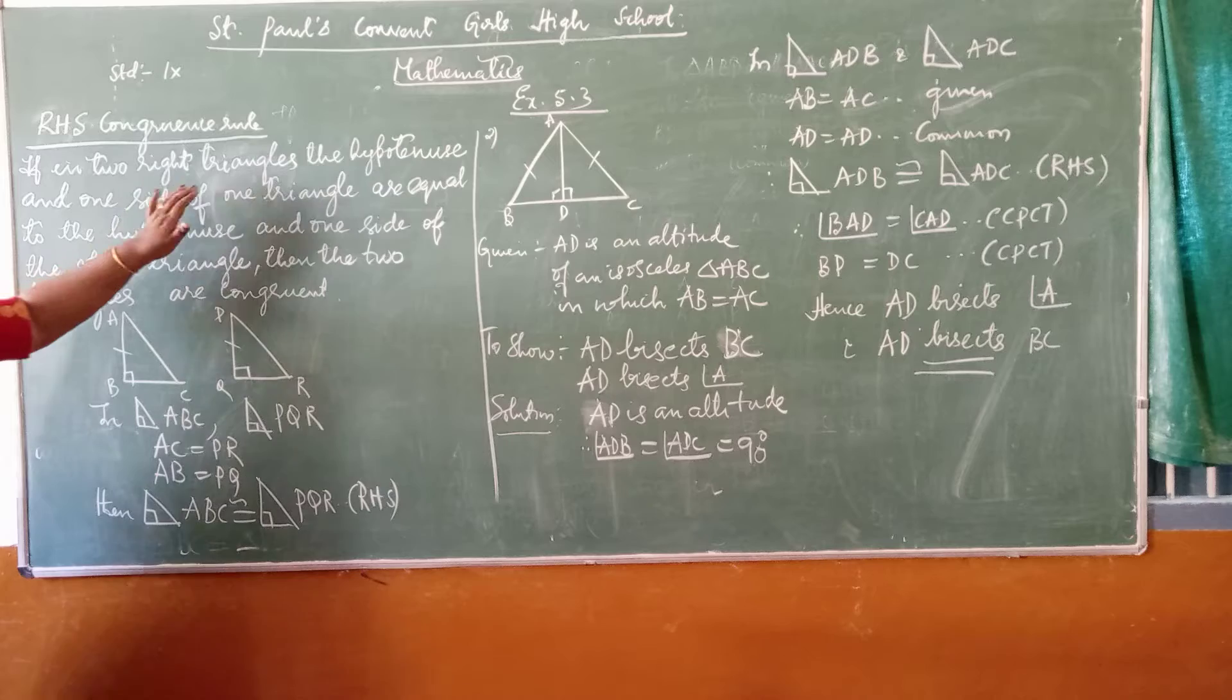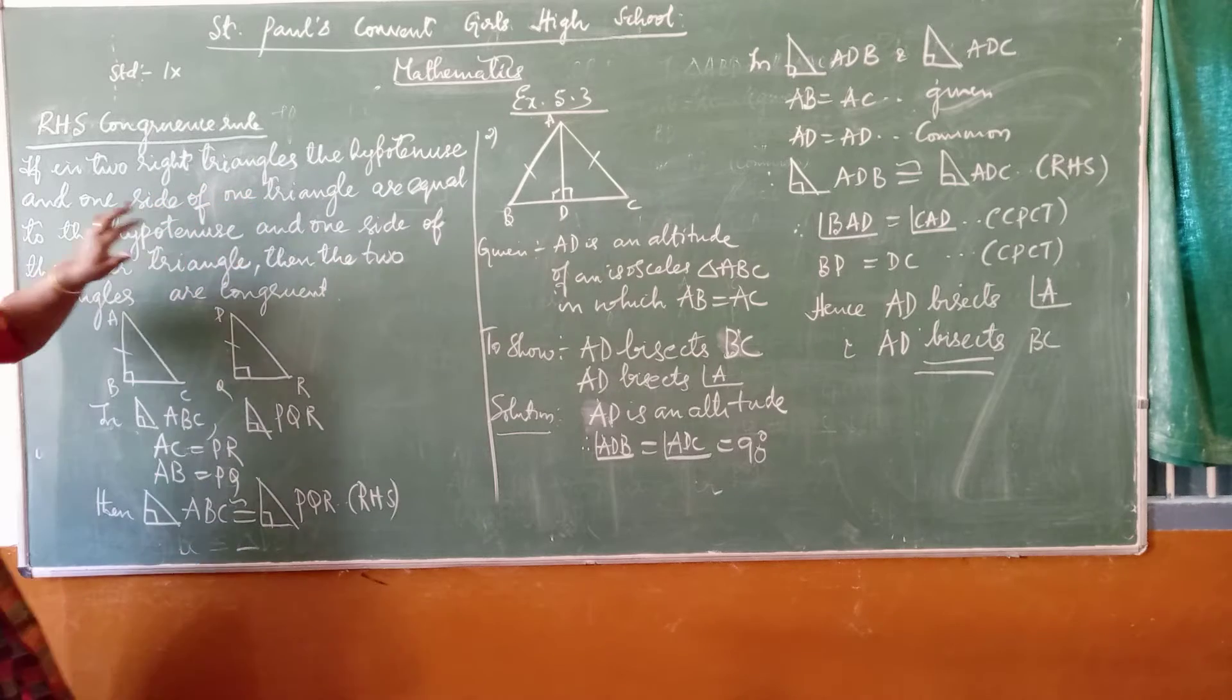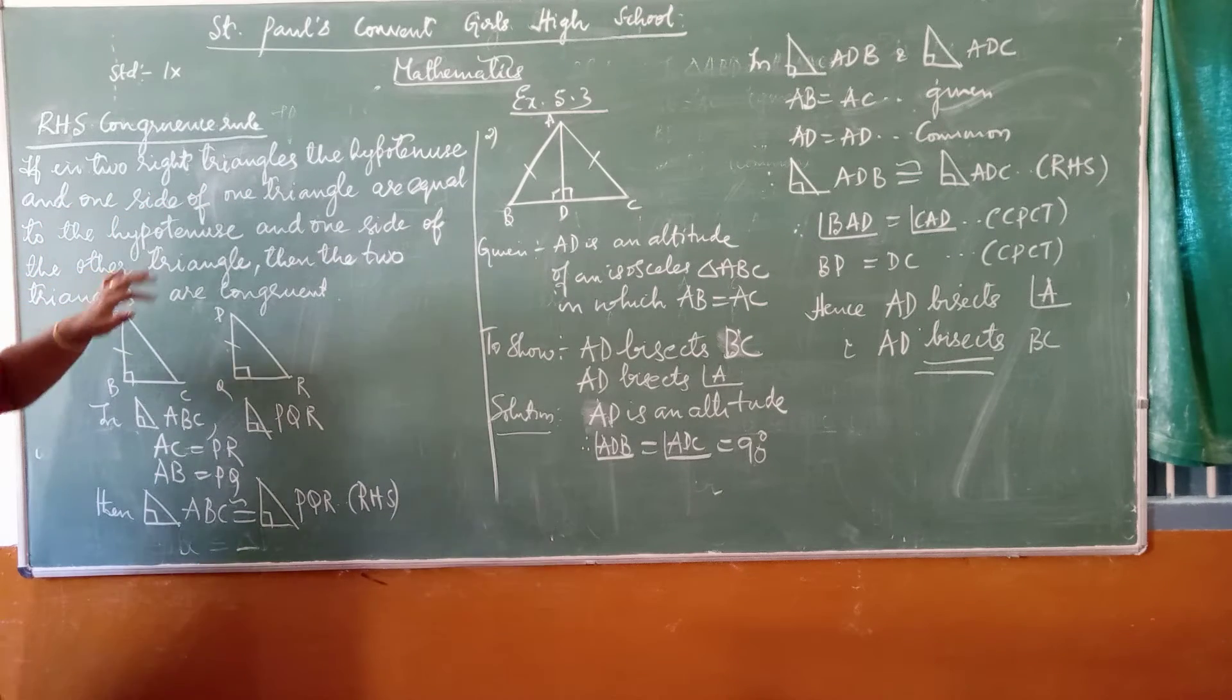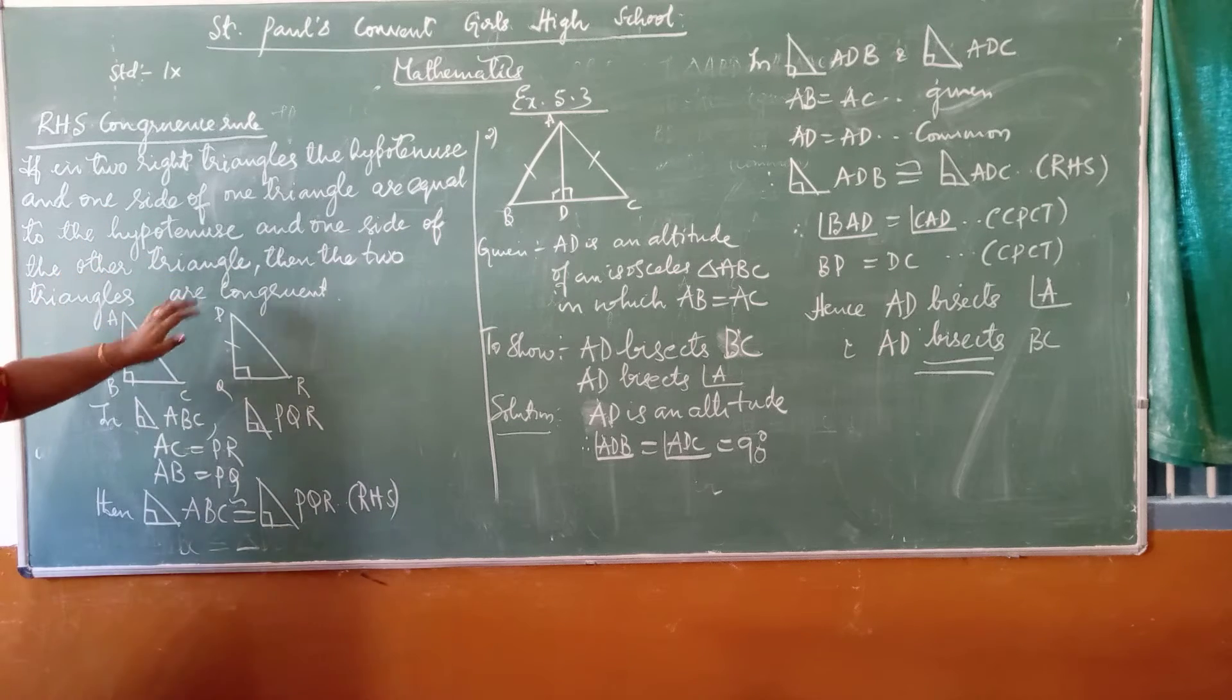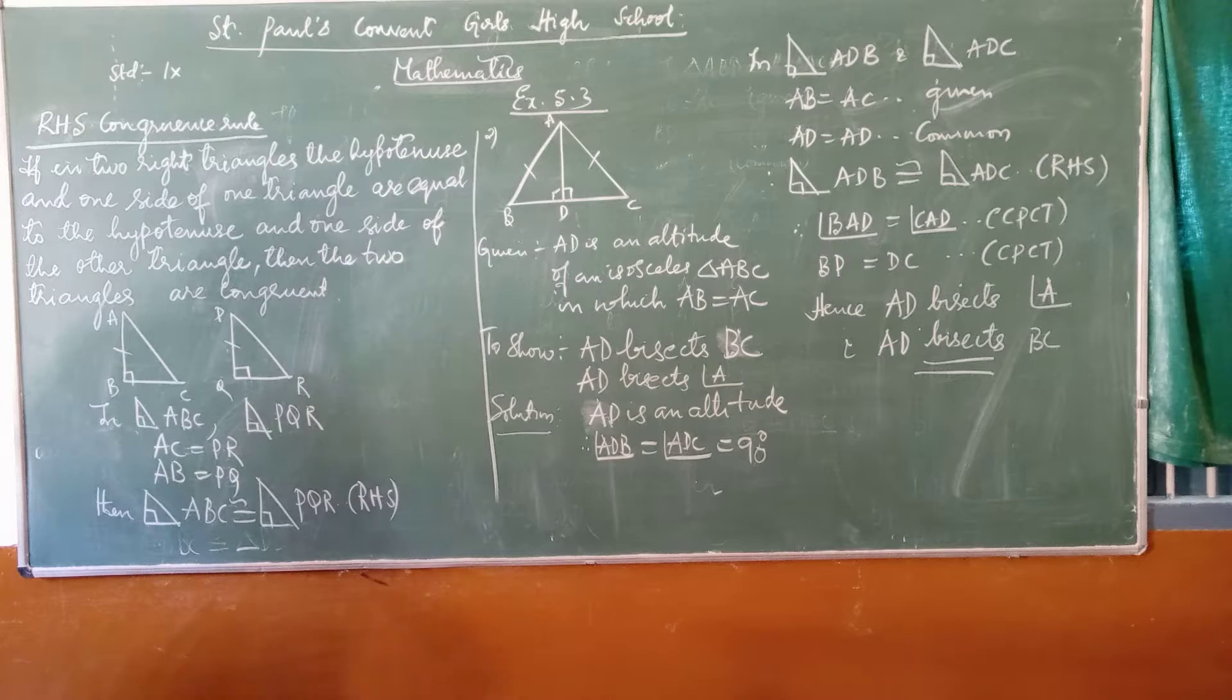It states that if we have two right triangles, the hypotenuse and one side of triangle should be equal to the hypotenuse and one side of the other triangle, then the two triangles are congruent.